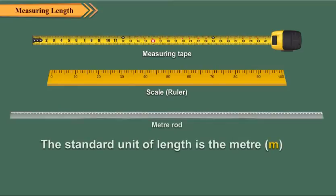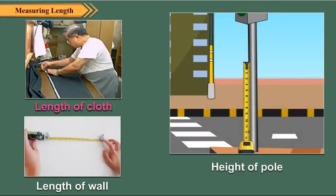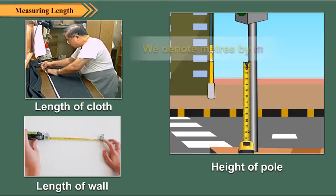The standard unit of length is the meter, that is M. Length of cloth, length of wall, height of pole etc. are measured in meters. We denote meters by M.